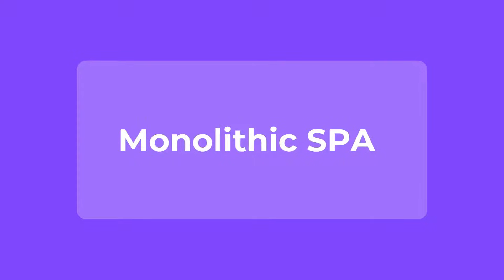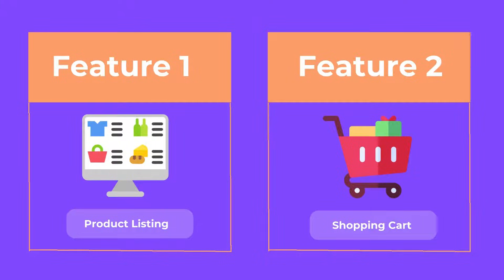Now if you want to turn this monolithic single-page application into micro frontends, what we need to do is divide the monolithic application by a few distinguished features. For example, feature one is product listing and feature two is shopping cart. Feature one — product listing — will have its own codebase and own repository, and similarly the second feature will have its own codebase and own repository. These become our two micro frontends.